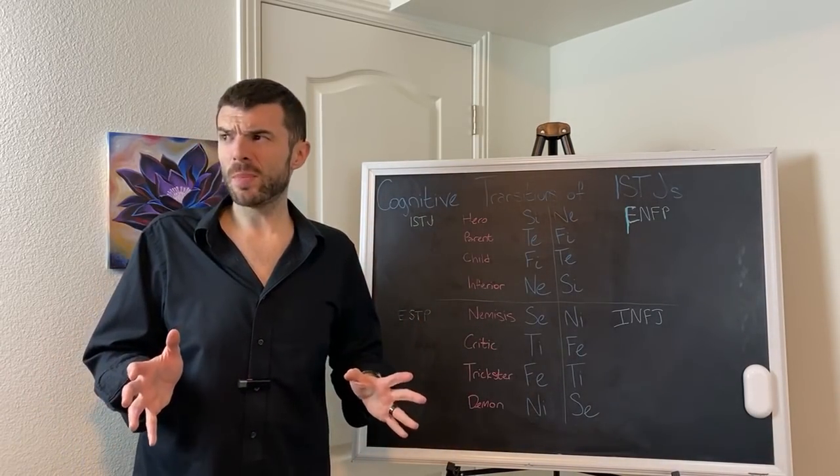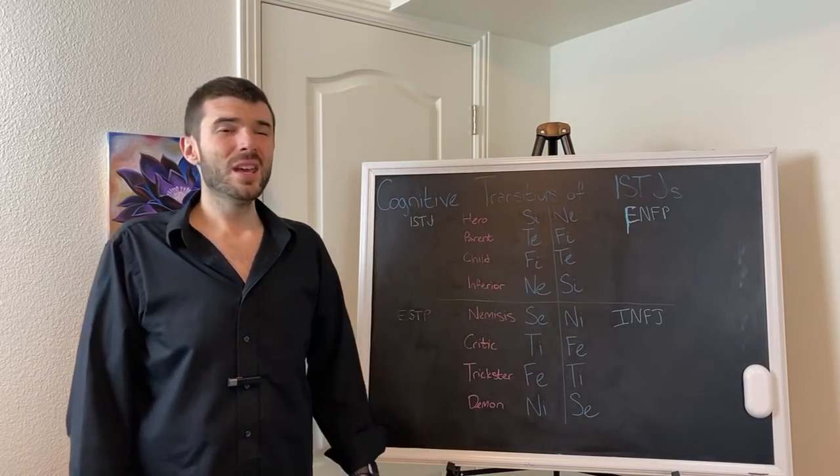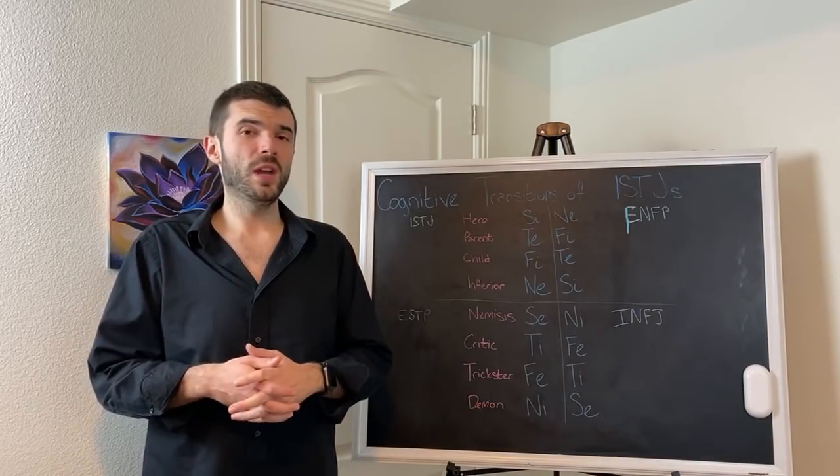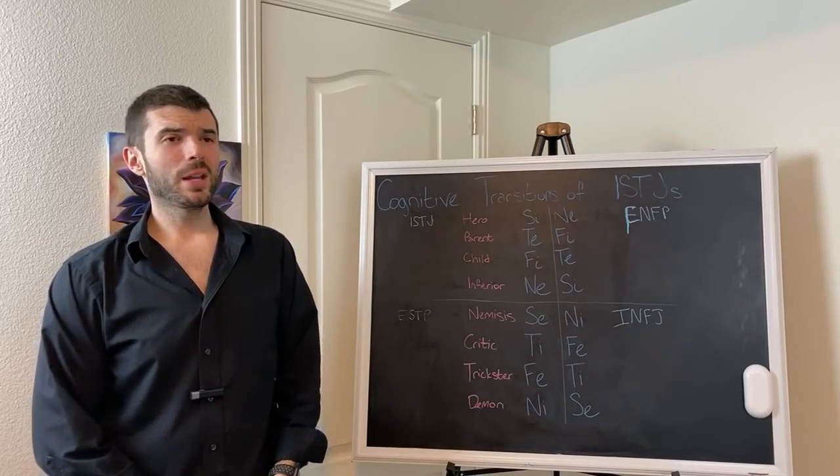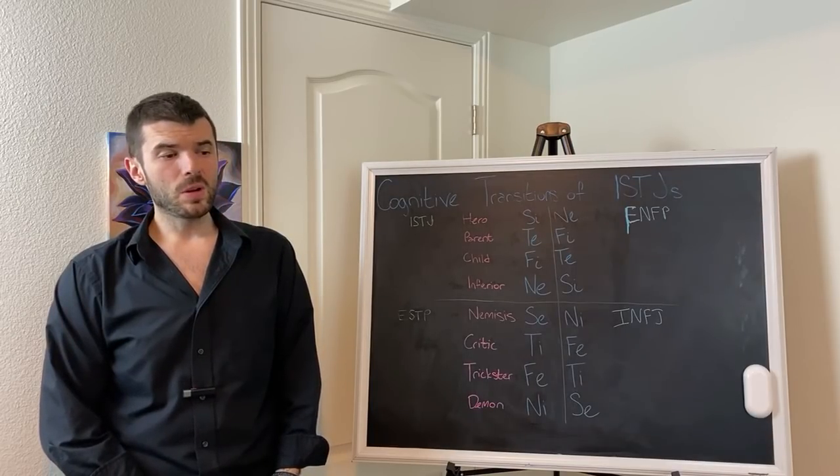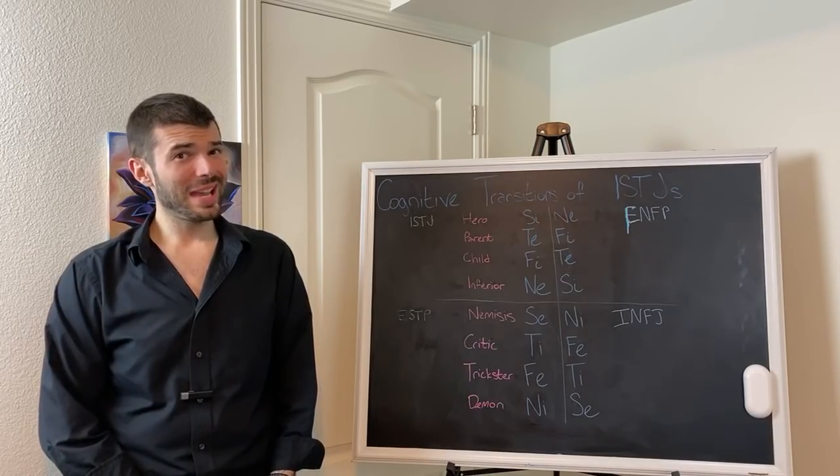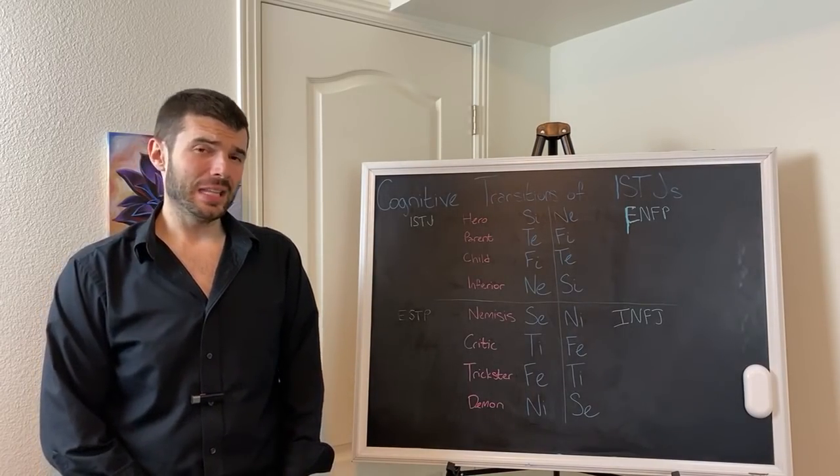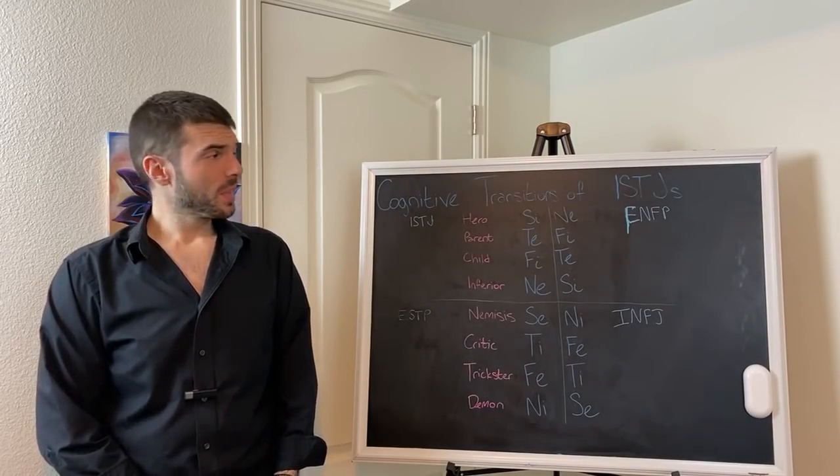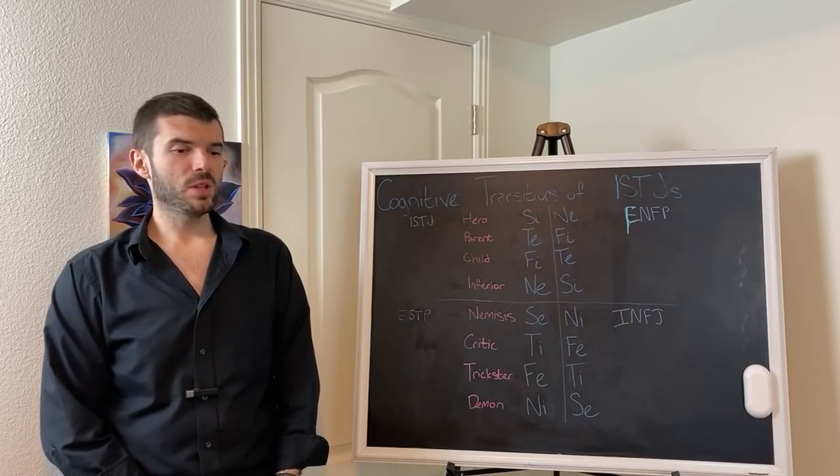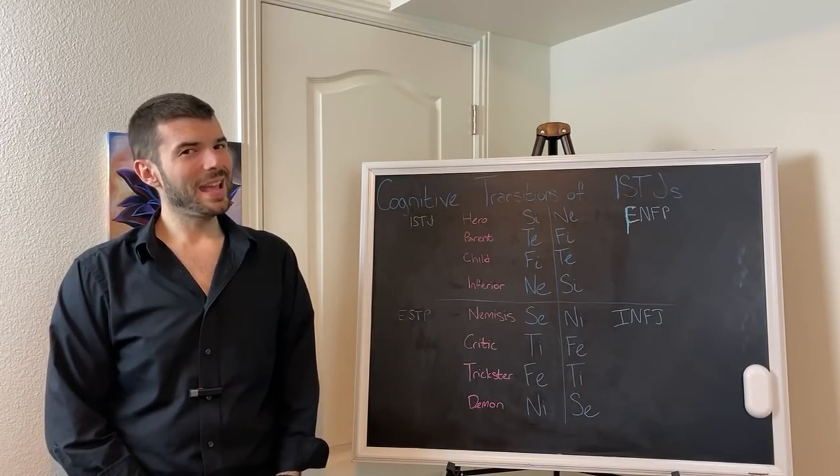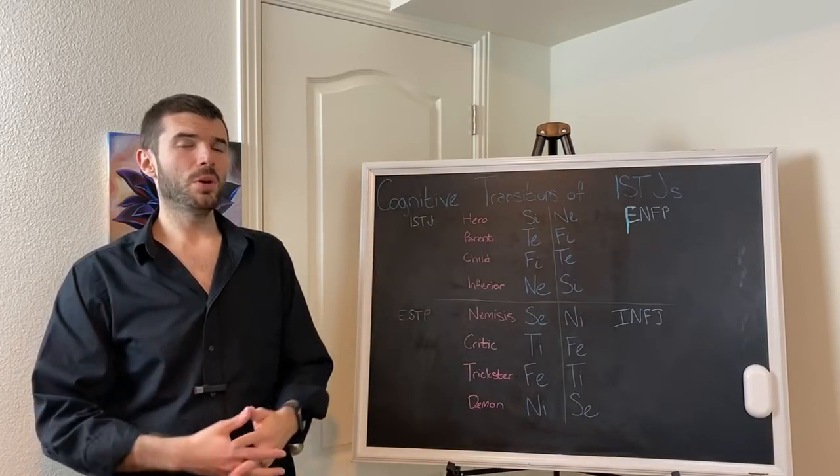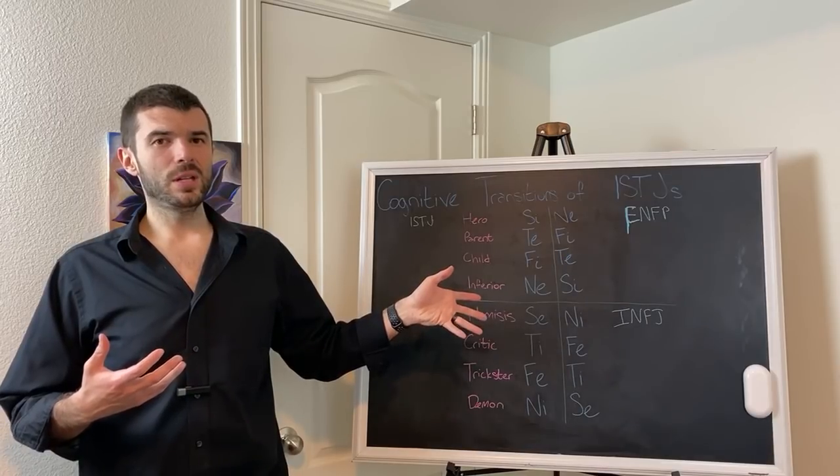ISTJs are amazing fake detectors, especially with their ESTP shadow, just like ESTPs. If you're going to be in a negotiation with millions of dollars at stake, I would recommend having an ISTJ and an ESTP present, because those two will absolutely guarantee you're getting the best possible deal.